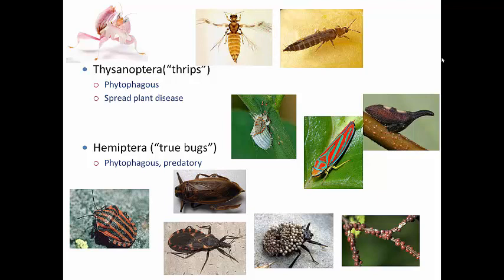Thysanoptera, or thrips, are very tiny organisms - all well under three millimeters long, sometimes even smaller. Most species feed on plants, making them phytophagous insects that cause a lot of problems in agriculture. Note that the word 'thrips' is both singular and plural - there's no such thing as 'a thrip,' it's always 'a thrips.' These thrips feed by scraping the surface of plants off.